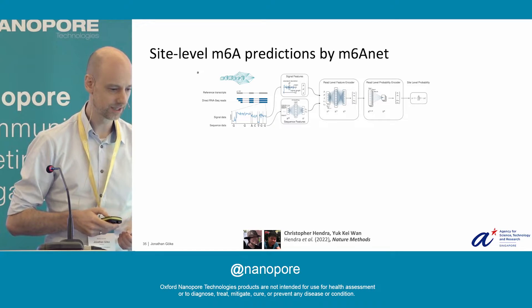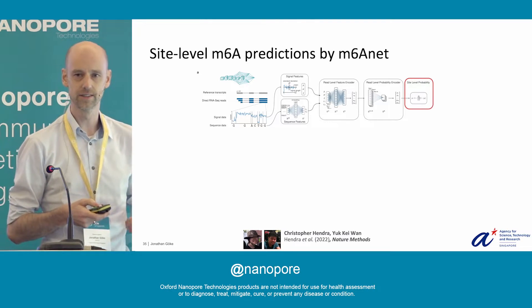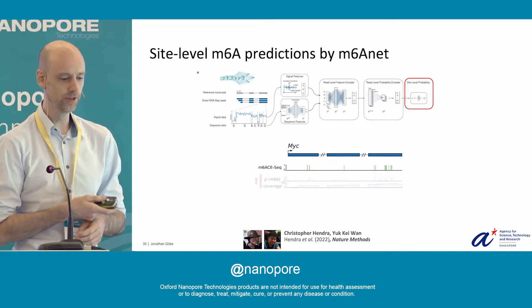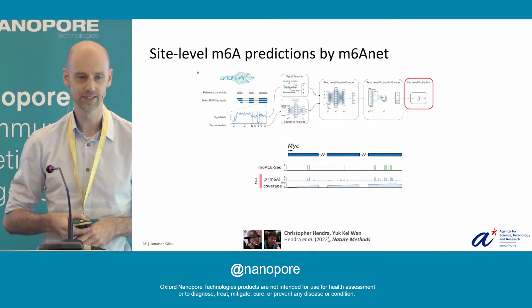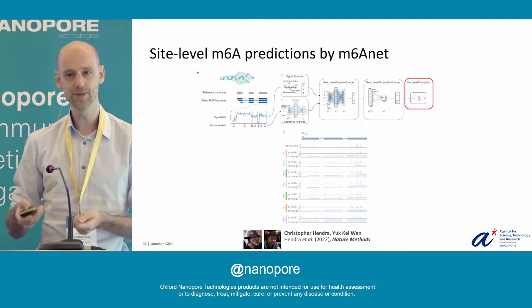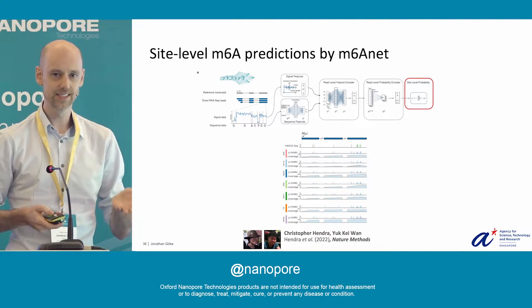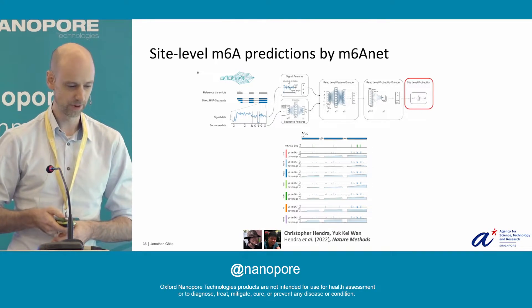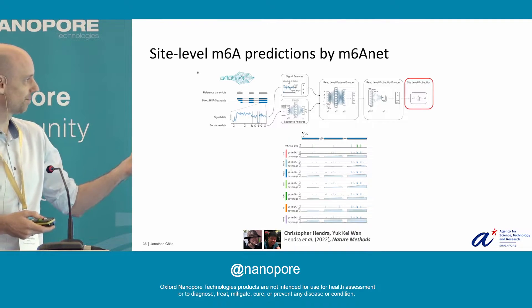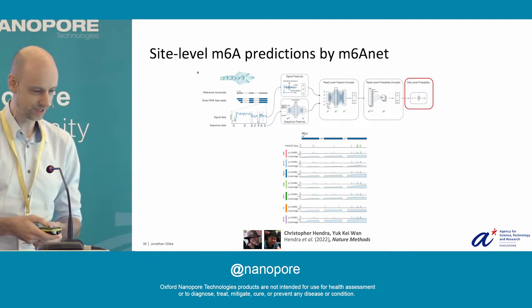To illustrate how that looks, just for one gene example, this is the data we use for training — the known positions that are modified. Here in blue, you can see the predictions we make, which are very similar to what we want to see. At the same time, you also get expression data from direct RNA sequencing, which is very nice. Another advantage is that this is an assay that's very simple to perform, which means we can look into a lot of samples at the same time.